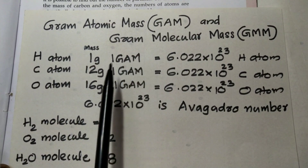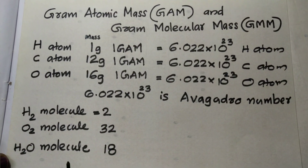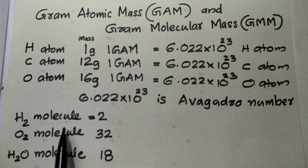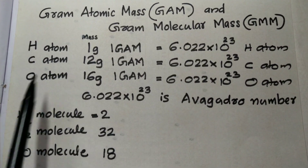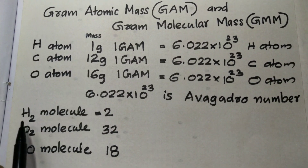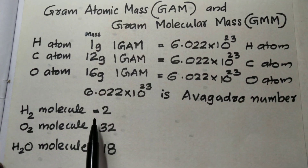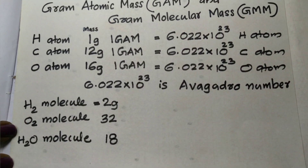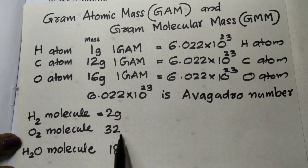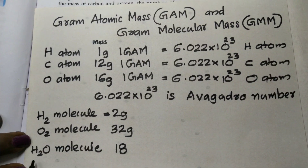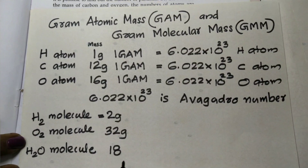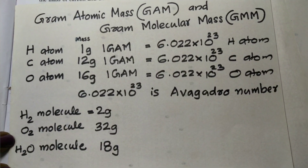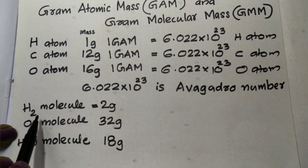We say mole atomic mass and mole molecular mass. Hydrogen molecule H₂ has 2 hydrogen atoms, so 1 mole of hydrogen molecule is 2 grams. 1 mole of oxygen molecule O₂ is 32 grams (16 × 2). H₂O — that is 18 grams. So 1 mole of water is 18 grams.